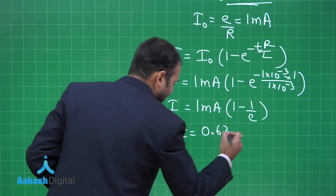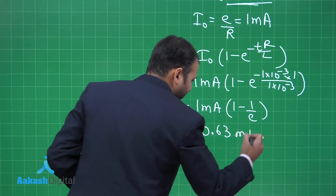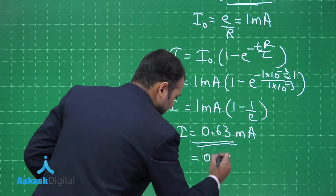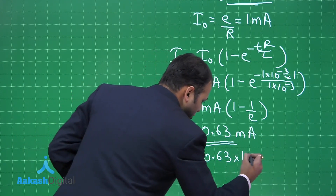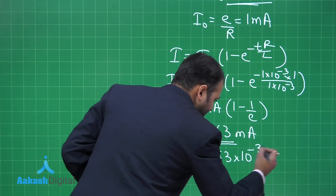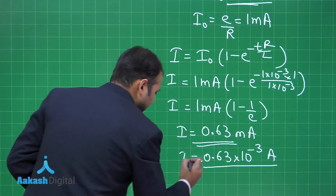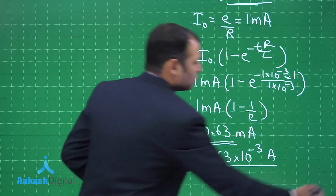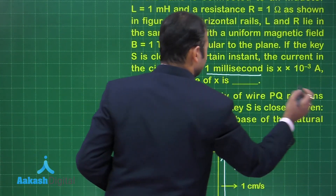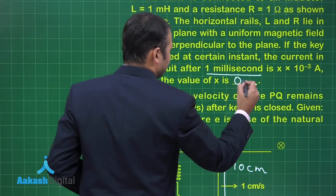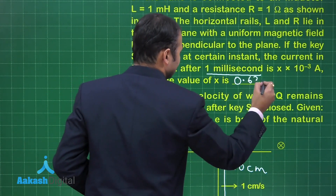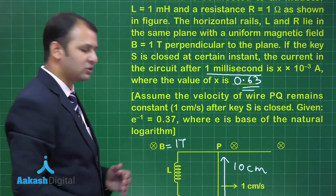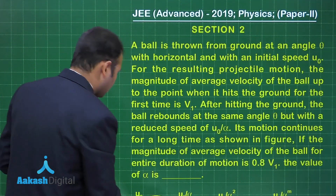Solving, we get I equals 0.63 milliampere, or 0.63 into 10 to the power minus 3 ampere. So the value of X is 0.63. I hope you have understood the question. Now let's move on to our next question.